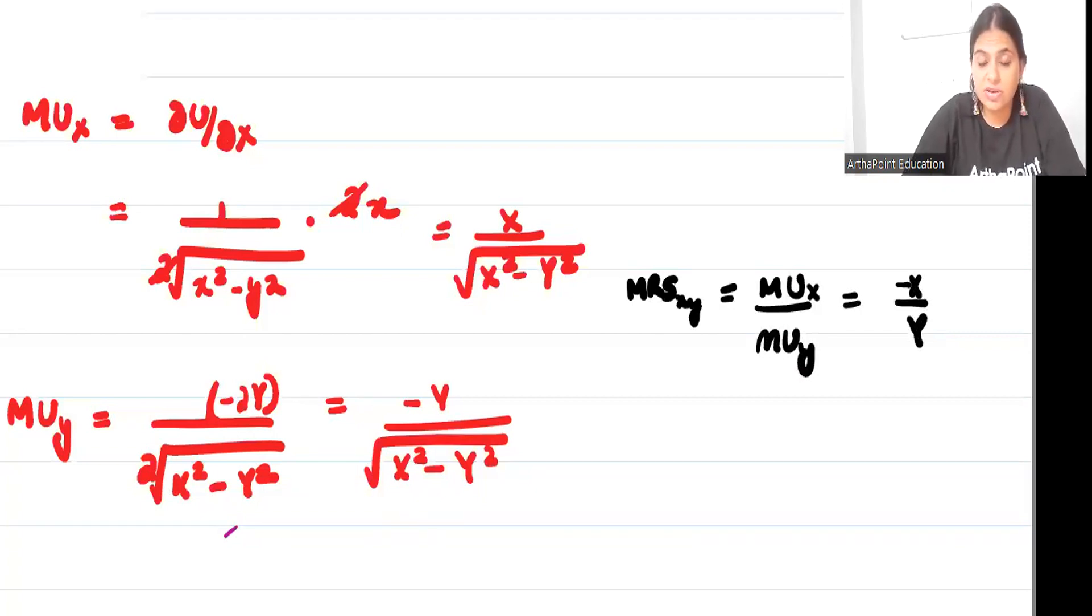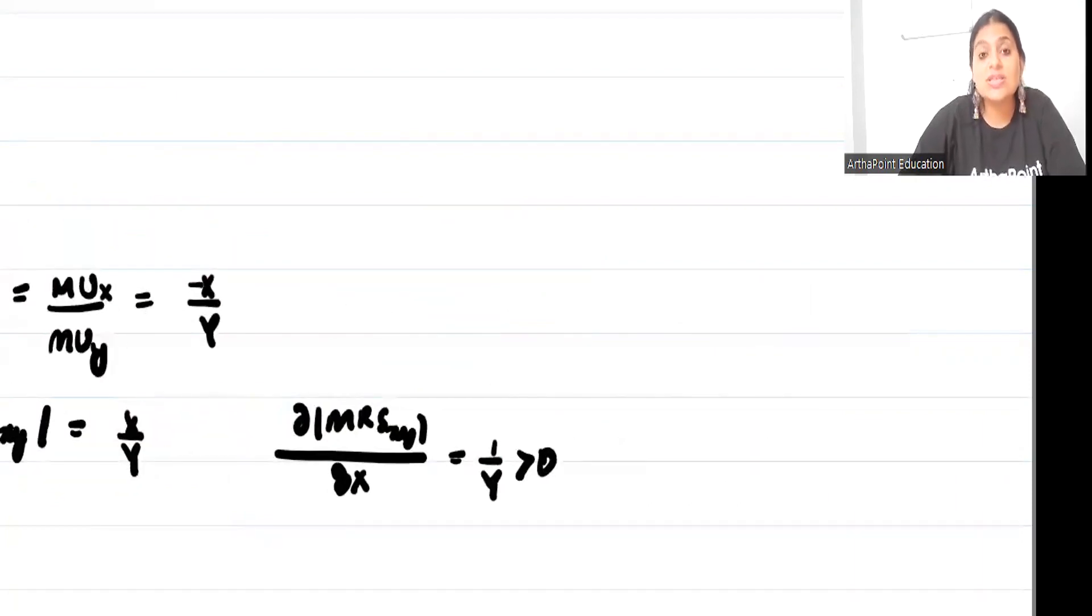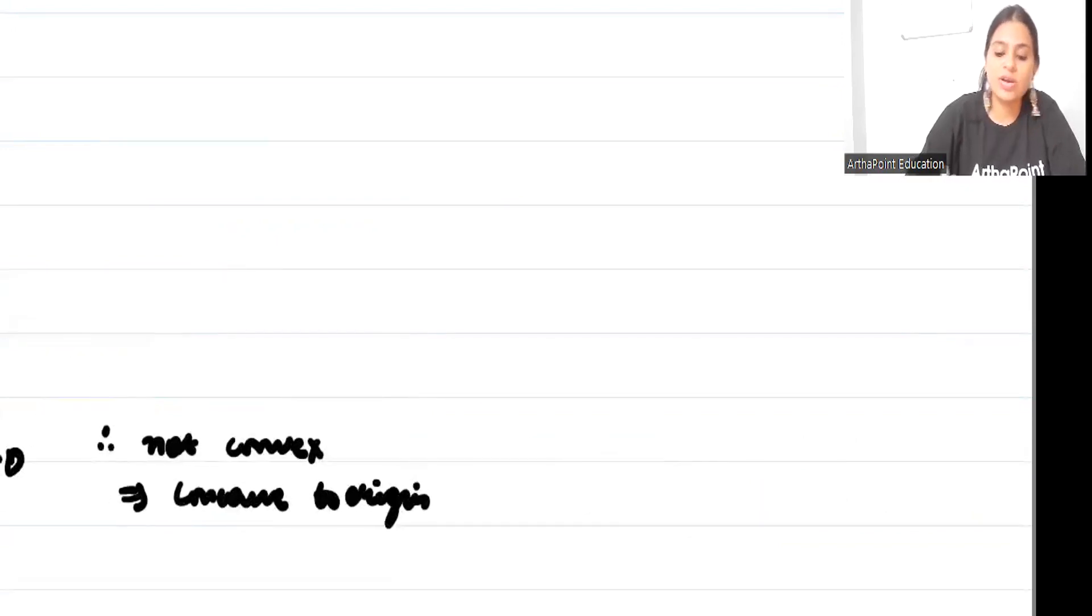Now just remember this. This is very important. Whenever we talk about what happens to MRS, we always ask how MRS changes as x changes. But whenever we take the value of MRS, it should always be taken in the absolute values. So this will be x by y. And if I ask how this MRS changes as x changes, you will get 1 by y. It is greater than 0, isn't it? So this is increasing. So therefore, it is not convex. What is it? Therefore, it is concave to origin.